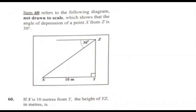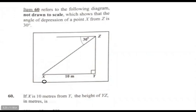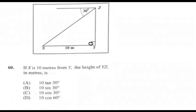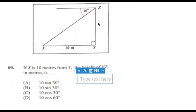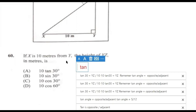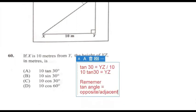Question 60 refers to a diagram not drawn to scale. What is the angle of depression of point X from Z of 30°? Since this angle is 30°, the opposite side is YZ and the adjacent side is 10. Using tan: tan(30°) = YZ/10, so YZ = 10 × tan(30°). The opposite over adjacent gives us tan, and our answer for 60 is A.